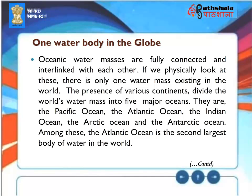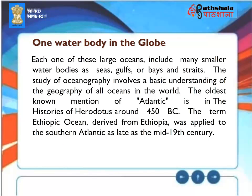The presence of various continents divides the world's water mass into five major oceans: the Pacific Ocean, the Atlantic Ocean, the Indian Ocean, the Arctic Ocean, and the Antarctic Ocean. Among these, the Atlantic Ocean is the second largest body of water in the world. Each of these large oceans includes many smaller water bodies such as seas, gulfs, bays, and straits. The oldest known mention of the Atlantic is in the histories of Herodotus around 450 BC.